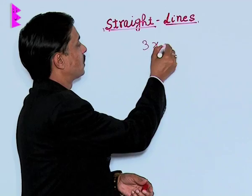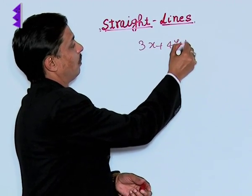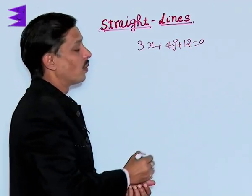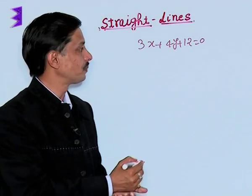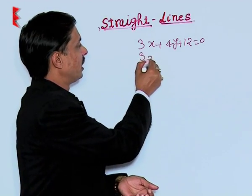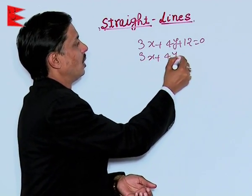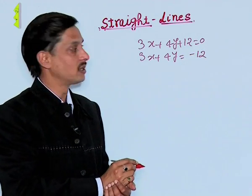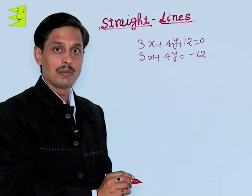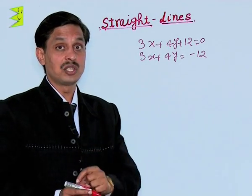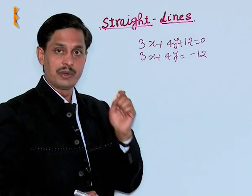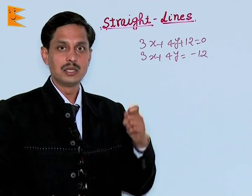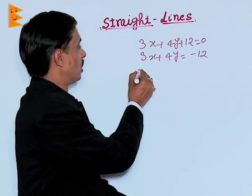Same question: if I take 3x plus 4y plus 12 equals 0 to convert it into normal form. The procedure is first of all, transfer the constant to the right-hand side, that is minus 12. And in the next step, if it is already positive, it is okay; otherwise, you change it to make it positive.